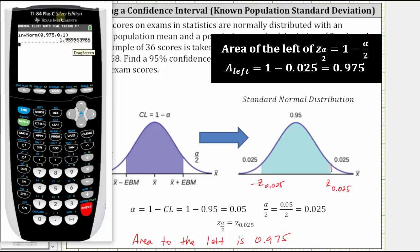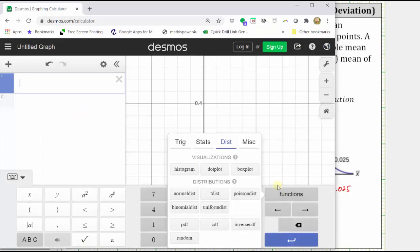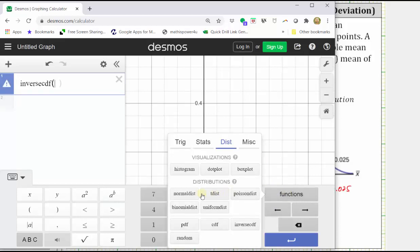Let's also show how to find this using desmos.com. Using desmos.com, we click show keypad, click functions, click the distributions tab, click inverse CDF, click functions, click normal distribution.